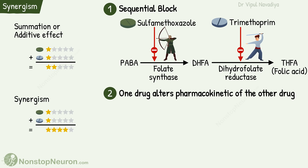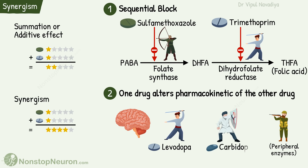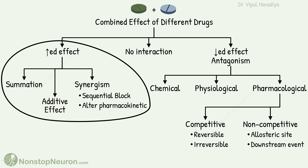Synergism can also occur when one drug alters the pharmacokinetics of the other drug. For example, when we give levodopa alone in Parkinsonism, the effect is negligible because most of the levodopa is degraded in peripheral sites, so very little enters the CNS to produce an effect. But if we combine it with carbidopa, carbidopa prevents its peripheral degradation, so most of the levodopa enters the CNS and produces the effect. Thus the combined effect is more than the sum of their individual effects.